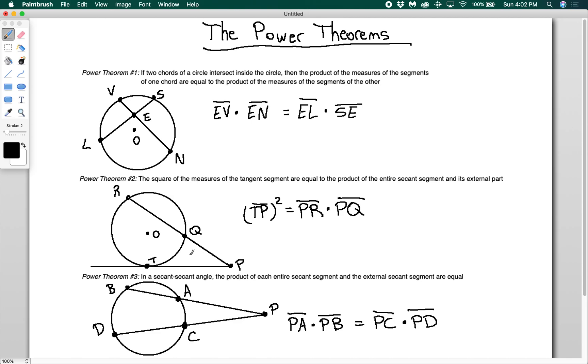TP squared is equal to PQ, which is the external part of the secant segment, times PR, which is the full secant segment. You just have to remember this. People mess this up because they do RQ times QP. Don't do that. You're doing PQ times PR—the whole thing times just the external part. Don't do internal times external.